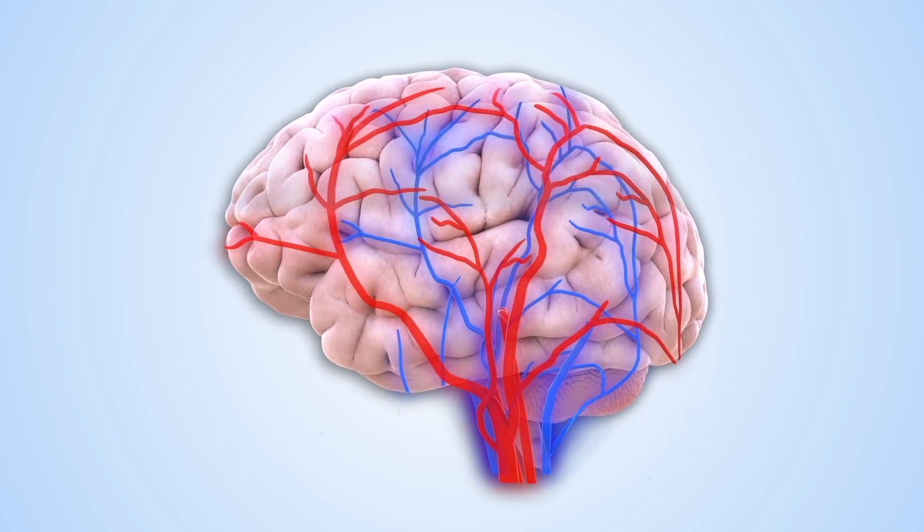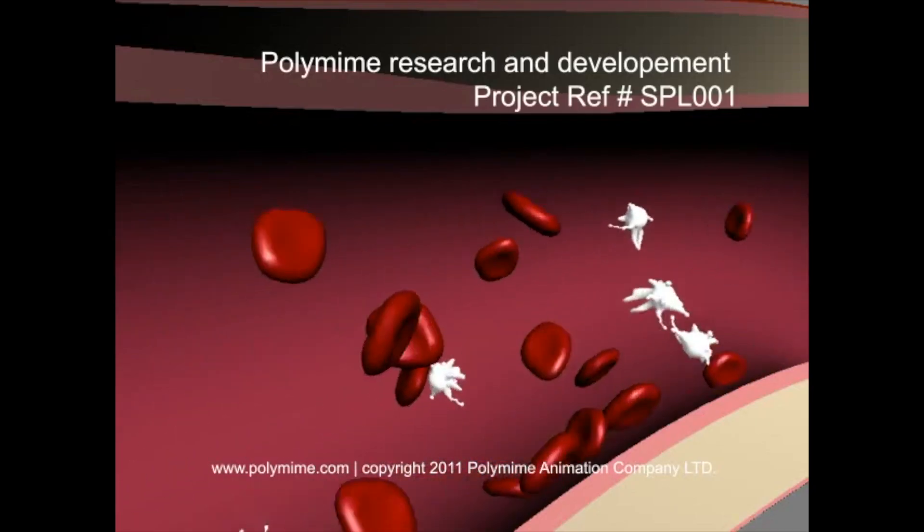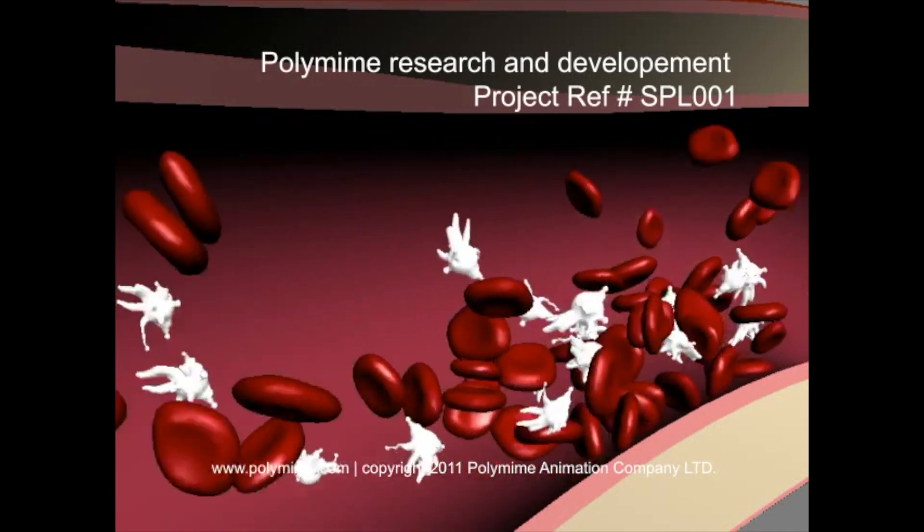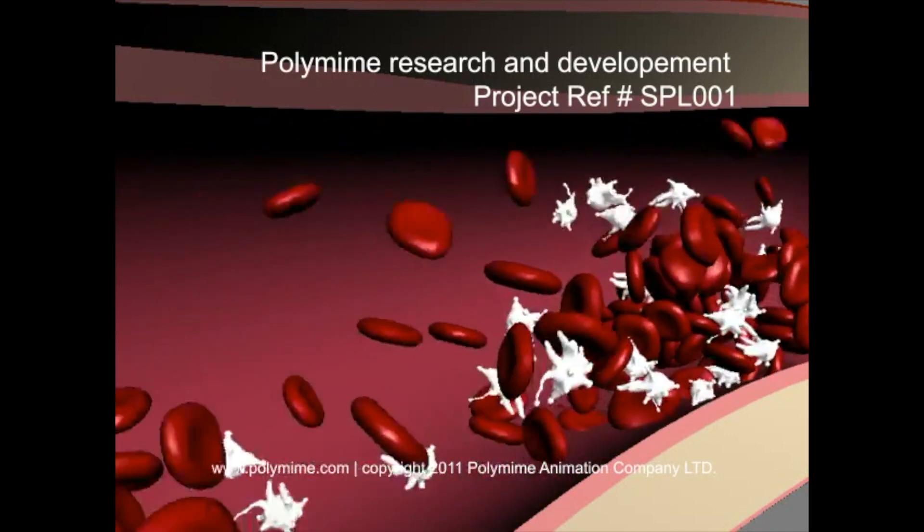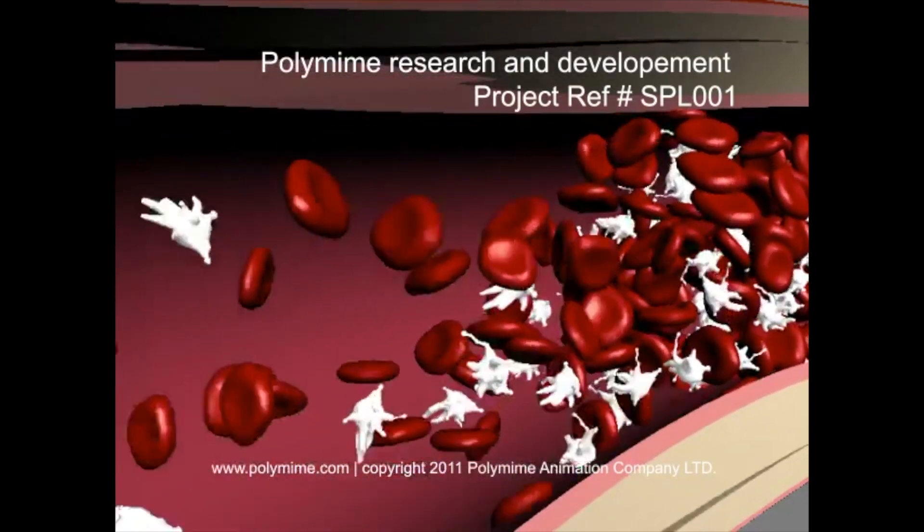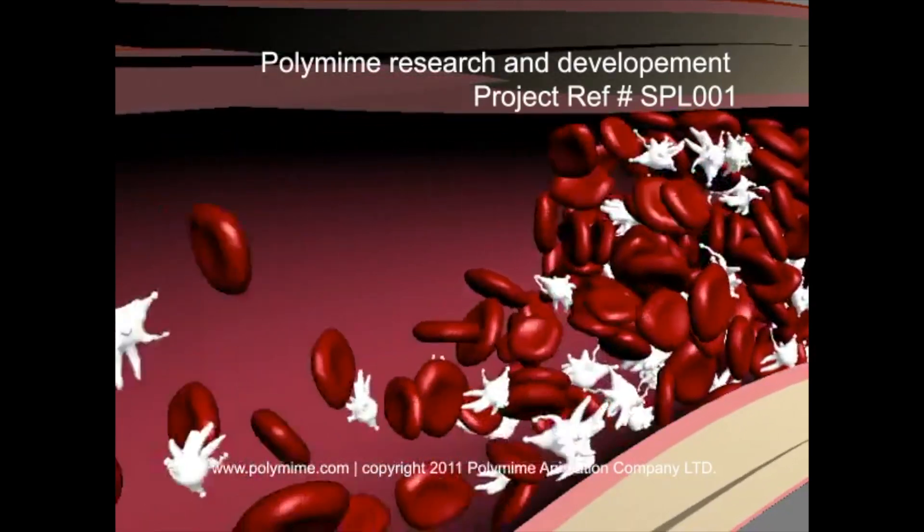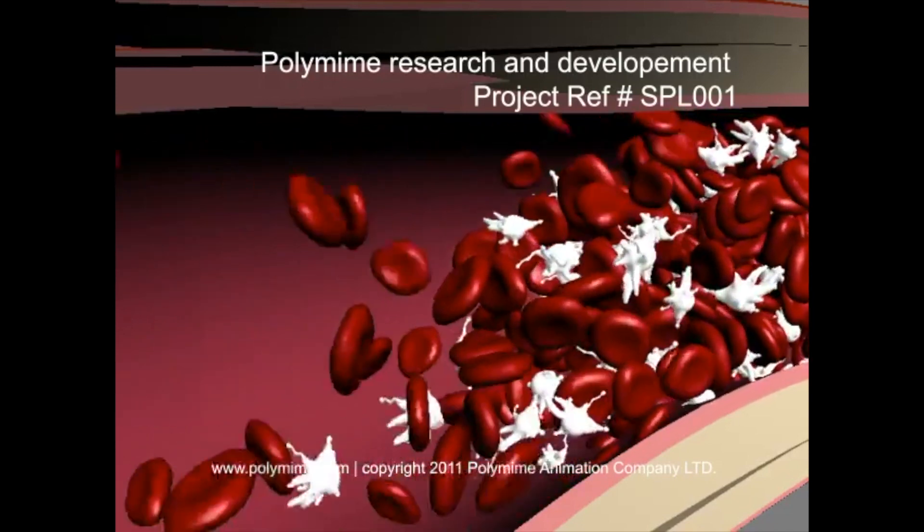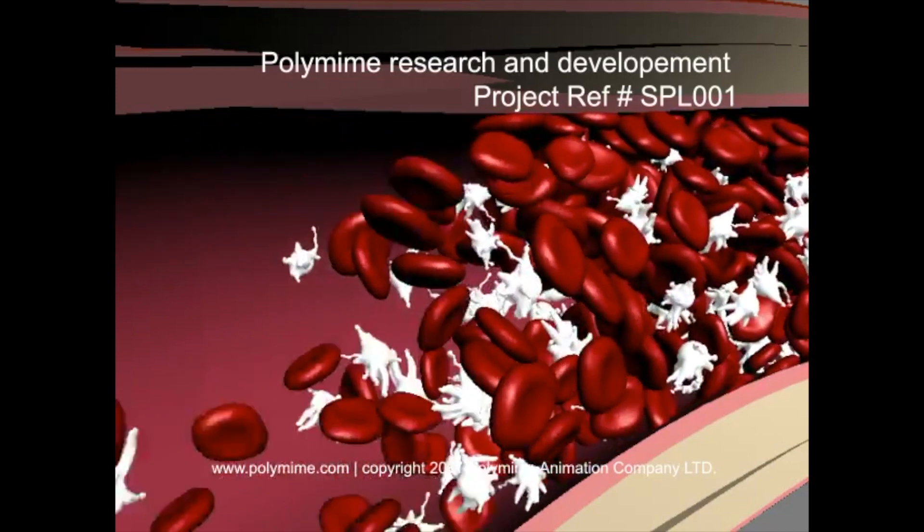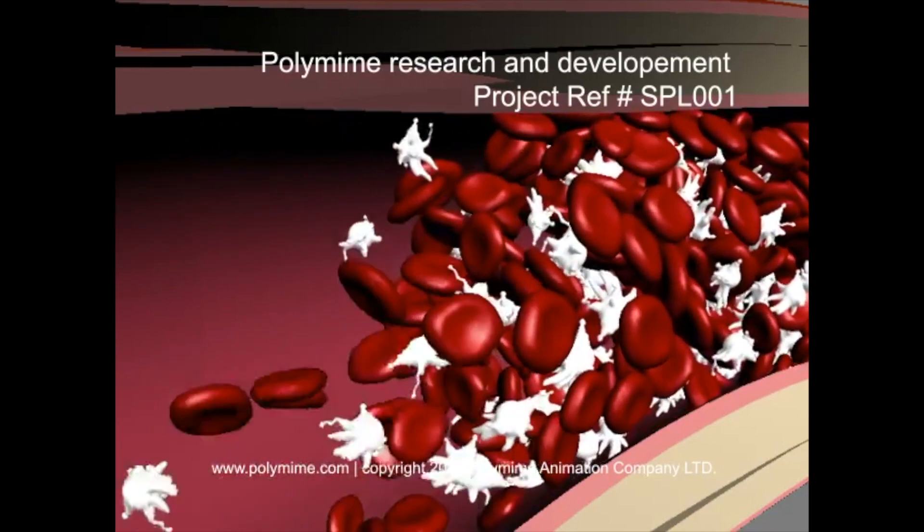Sepsis can also cause what's called DIC or disseminated intravascular coagulation—disseminated means having spread throughout an organ or the body, intravascular means in the blood system, and coagulation means changing from a liquid to a solid. In other words, the overreaction from the body produces chemicals that solidify the blood and can cause a blood clot, which has caused some strokes.